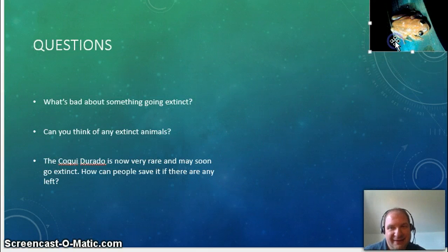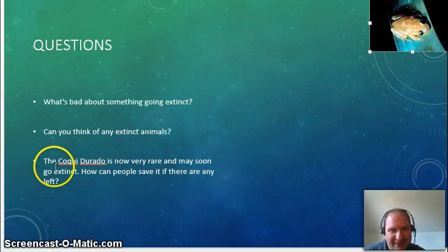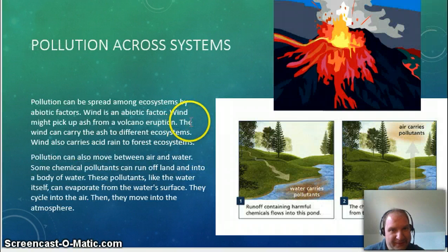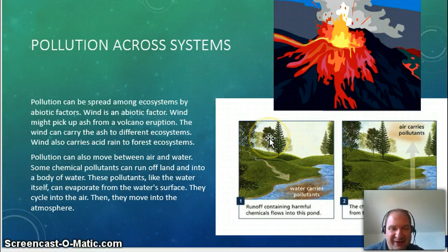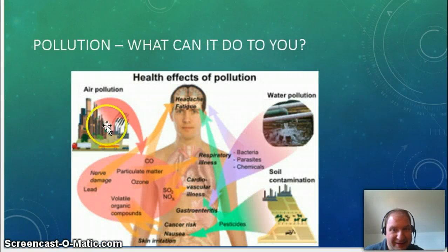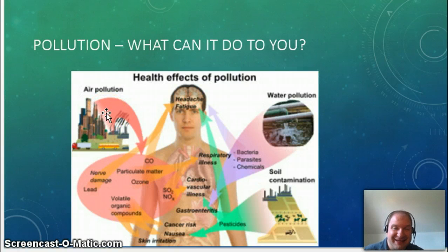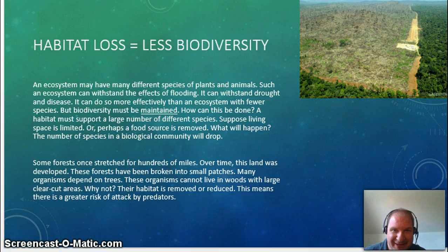We'll take a look at this guy — the gold coquille, the coquille dorado. He may very soon be extinct. How can we save them? Something else we'll talk about: pollution across systems. Volcanoes make pollutants; factories make them too. They go in the water, they go in the air, they go inside you. That's something we'll cover with our graphic organizer assignments coming up.